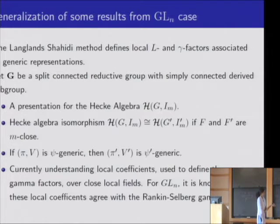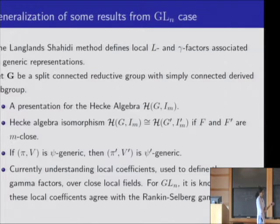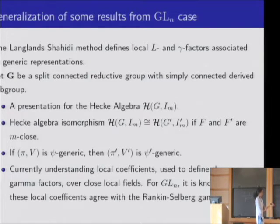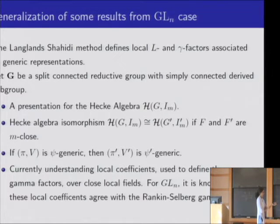What we are currently working on is understanding the local coefficients, which are defined using intertwining operators and Whittaker functionals in the Langlands-Shahidi method. We are investigating whether, for two representations that correspond over close fields, their local coefficients agree. That would be one step closer to proving that the gamma factors agree over close fields. For GL_N, it is already known due to Professor Shahidi that local coefficients from his method agree with the Rankin-Selberg gamma factors, but this is not known in general. So we are analyzing the local coefficients in that case. That is the question I am thinking about right now.